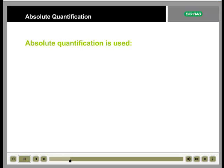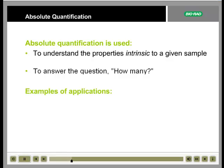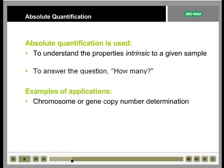Absolute quantification is used when an experimenter wants to know the properties intrinsic to a given sample. For absolute quantification, the question often asked is, how many? Two examples of applications in which absolute quantification are used are copy number determination, of either chromosome or gene copy number, and viral load measurement.